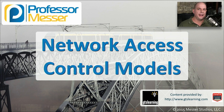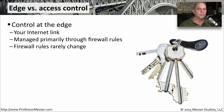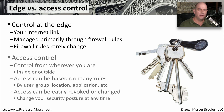There are many different ways to provide access control of who's on your network at any particular time. In this video, we'll look at a number of different techniques to provide network access control. One common place to control access is right at the edge of your network, right through your firewall. This is usually where you're connecting to the internet, and you're setting up access control lists or rules inside of your firewall that are determining who can come into the network and who can leave the network.